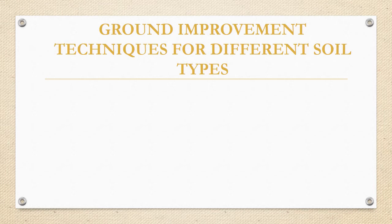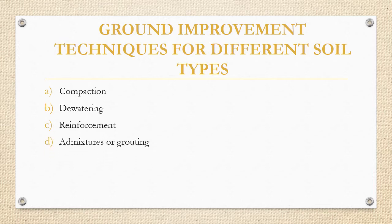Ground improvement techniques for different soil types include: compaction (mechanical modification), dewatering (hydraulic modification), reinforcement (ground inclusions), and admixtures or grouting (ground stabilization or ground treatment by means of granular or chemical admixtures). These are the common techniques used for stabilizing or improving different types of soils.